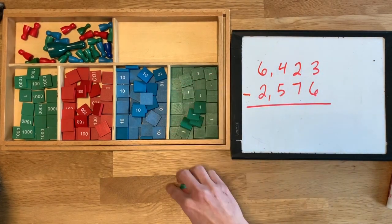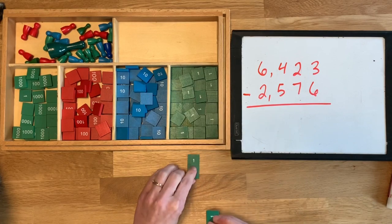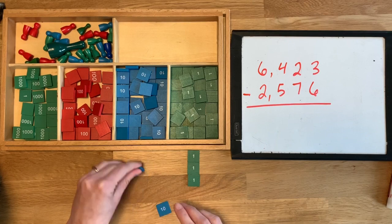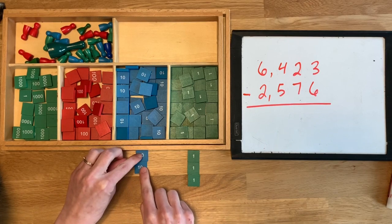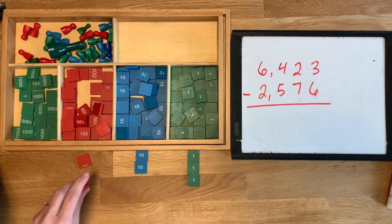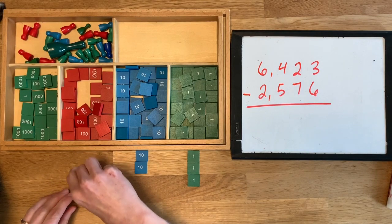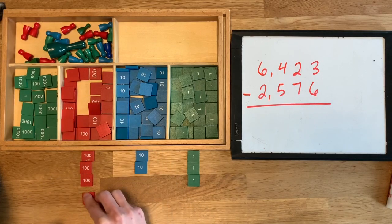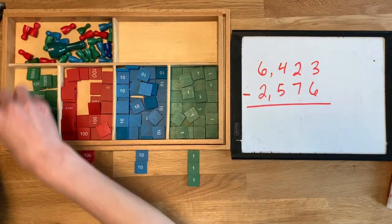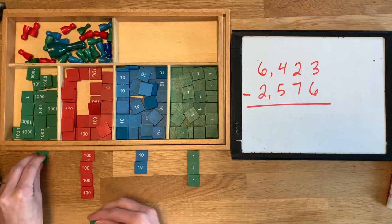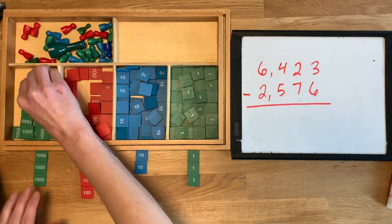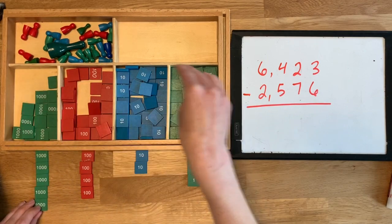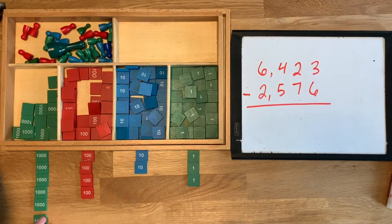I need three units. I need two tens. I need four hundreds. And six thousands. That was a unit in the wrong spot.